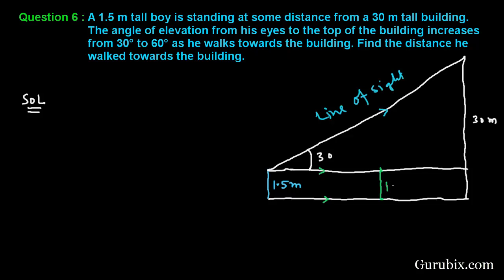The boy moves towards the building — suppose he moves from this place to this place. He is still 1.5 meters tall, but now the angle of elevation becomes 60 degrees. We have to find out the distance he walked toward the building.